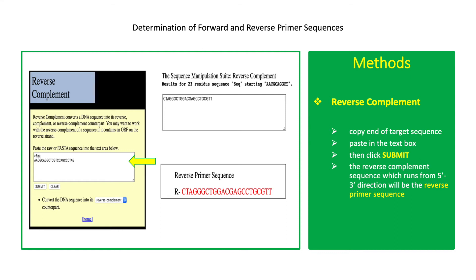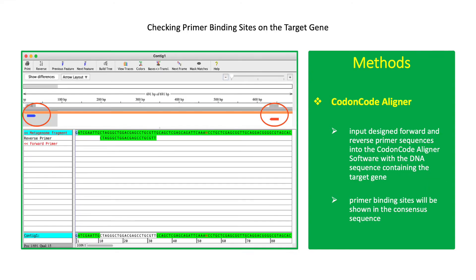Copy the end of the target sequence, paste it in the text box, then click Submit. The reverse complement sequence, which runs from 5' to 3' direction, will be the reverse primer sequence. After generating the forward and reverse primer sequences, check the primer consensus sequence with the target gene. Codon-Code Aligner can be used to visualize the primer binding sites on the target gene. Input the designed forward and reverse primer sequences into Codon-Code Aligner with the sequence of the target gene. Primer binding sites will be shown in the consensus sequence.